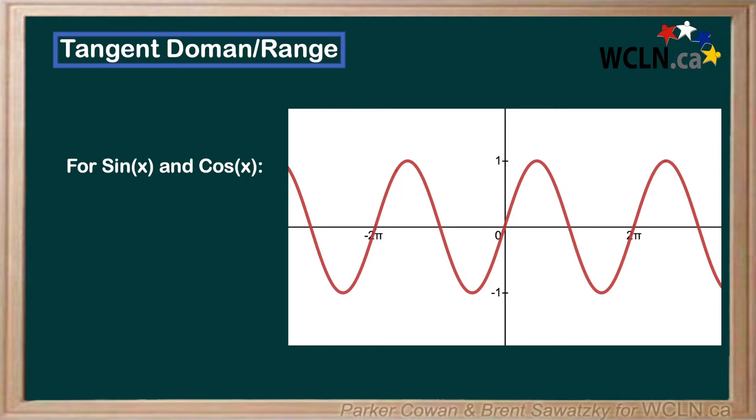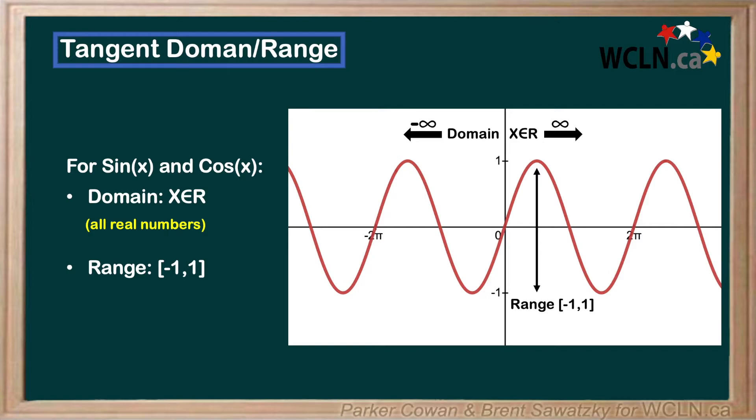Thus, we can say the sine and cosine curves have a domain of all real numbers, or in more concise terms, we say x∈ℝ. And we can say the range is bounded by negative 1 and 1, or in other words our amplitude.